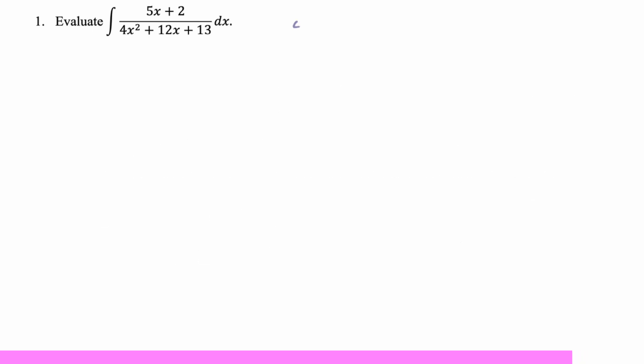I mean, I might initially try to do u substitution, but I can see that the du would be 8x plus 12, and that does not line up well with 5x plus 2. So instead, I'm going to try to complete the square. I'm going to rewrite this thing, take 4 out of the x squared and the x term. So we have 4 and then quantity x squared plus 3x, and then 13 just on the side. To complete the square, we take the coefficient of x, which is 3, divide by 2, that's 3 halves, square it, that's 9 fourths.